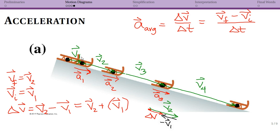Note that because we had four velocity vectors and we're subtracting them, you only end up with three acceleration vectors. In this case we see that it's a constant acceleration — the vectors are the same size and point in the same direction.